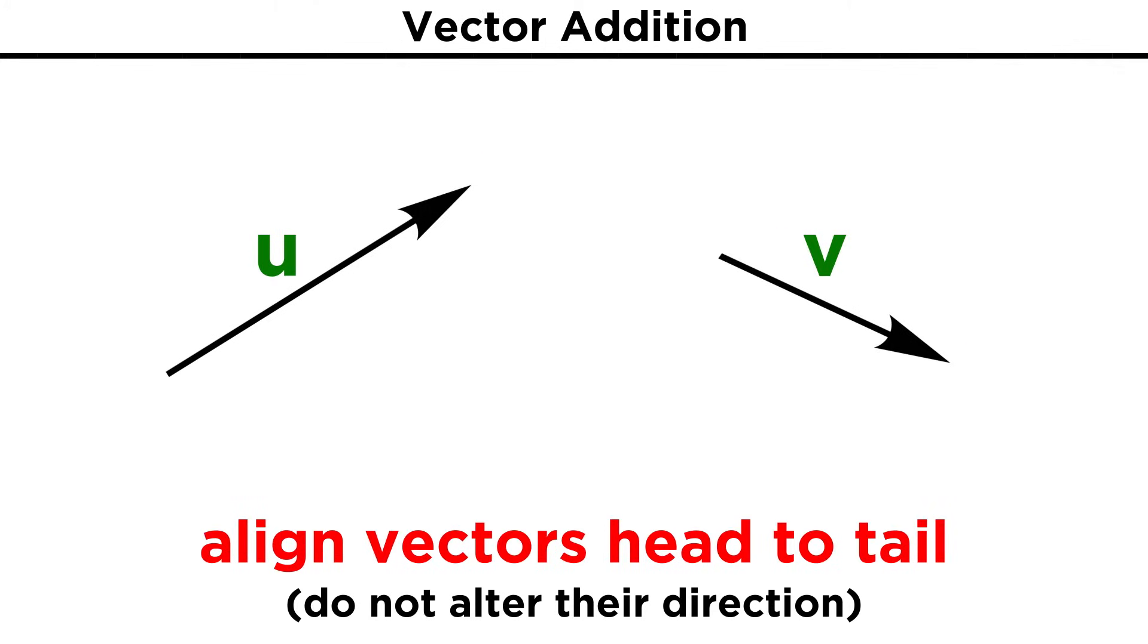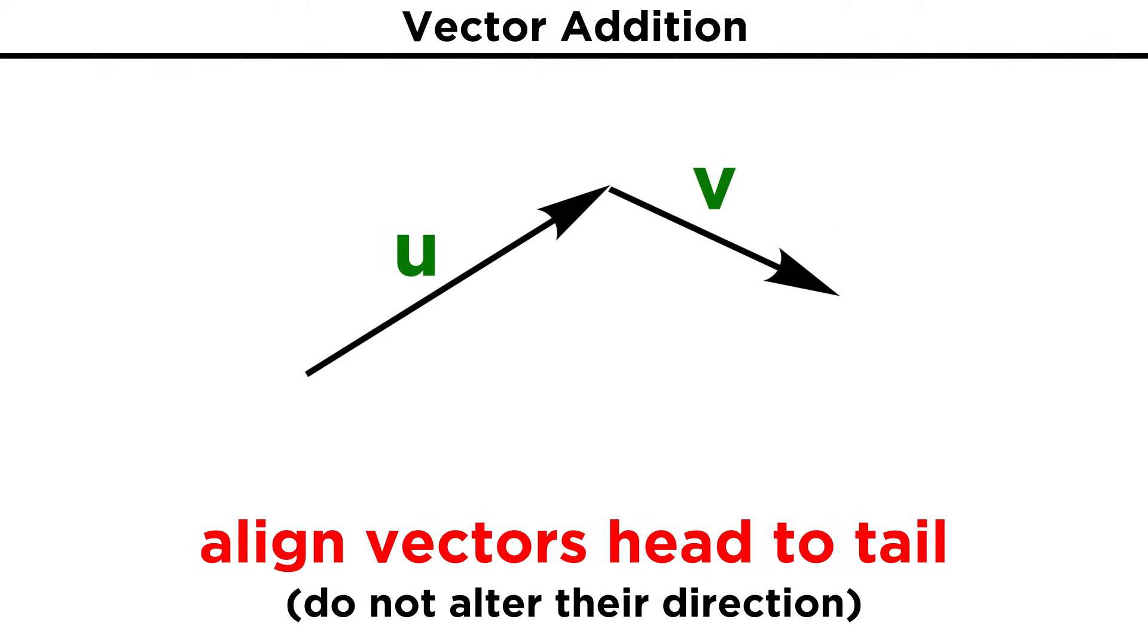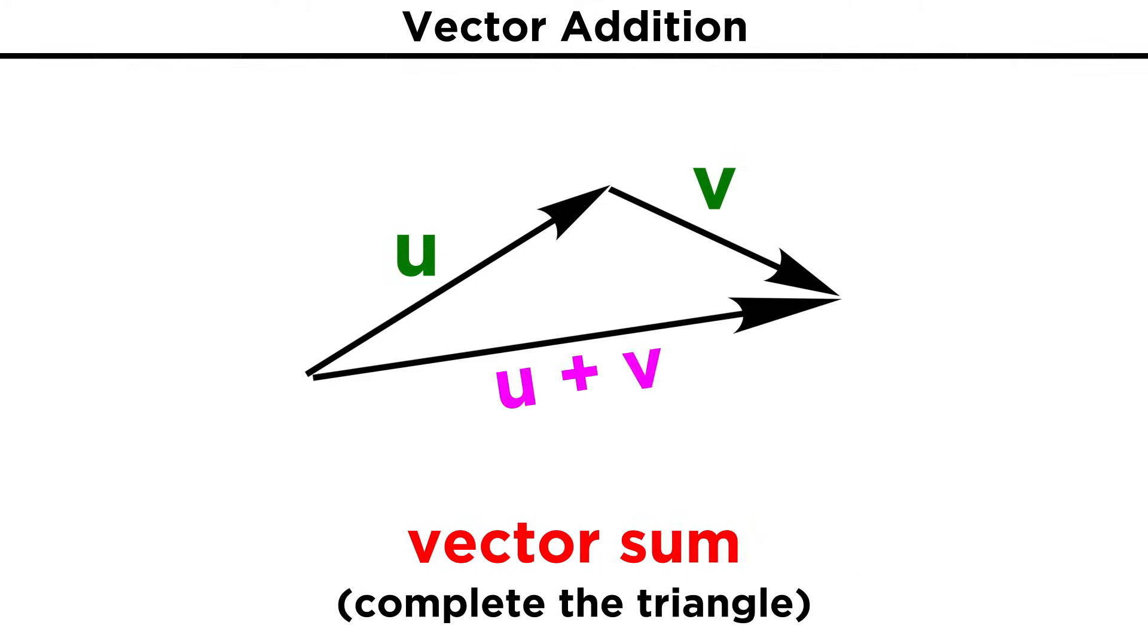First there is vector addition. If we have vector U and vector V, and we place them head to tail, with V starting where U ends, being very careful not to alter the direction of either vector, then the sum of these vectors, or U plus V, will simply go from the start of U to the end of V, forming a triangle, like so. If these vectors were AB and BC, their sum would be called AC, as it would connect A and C.